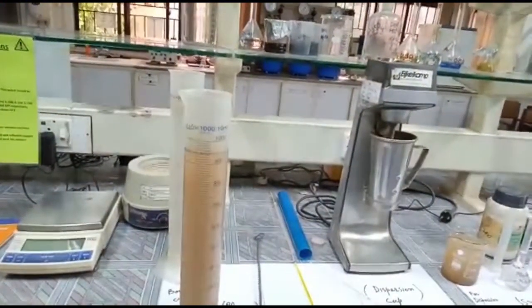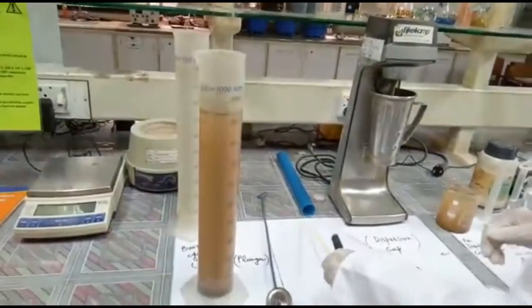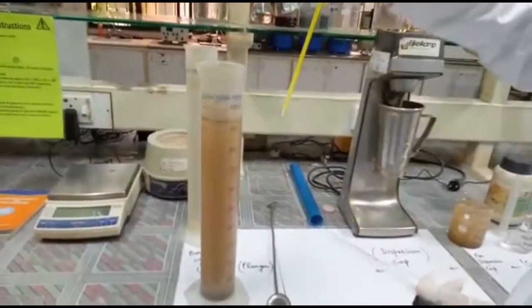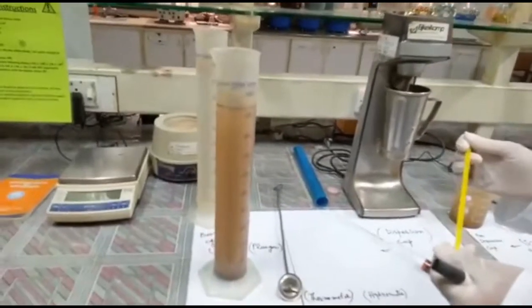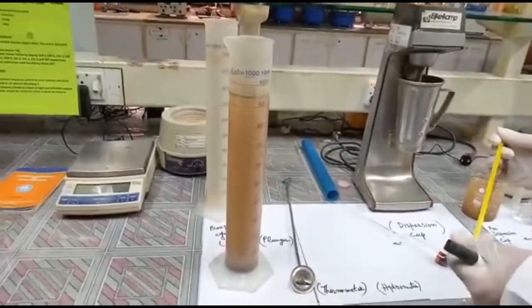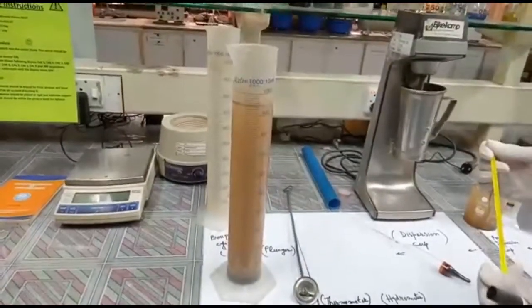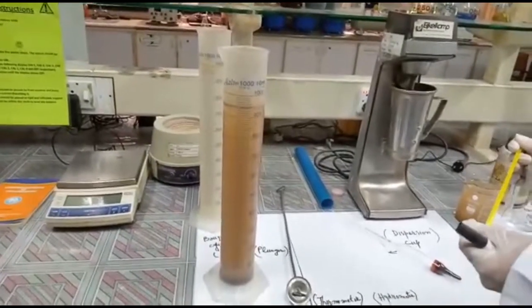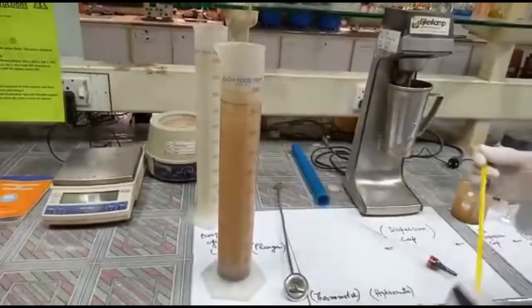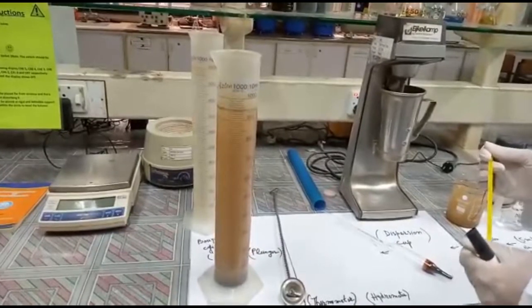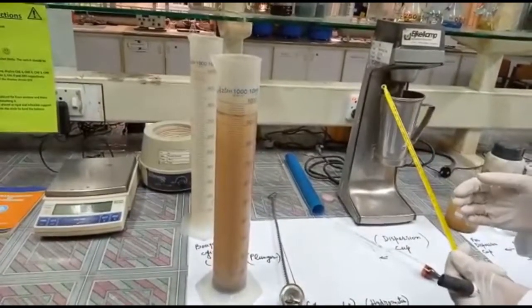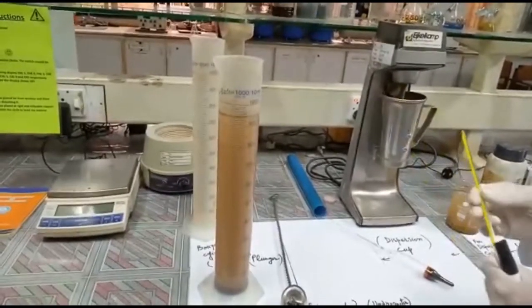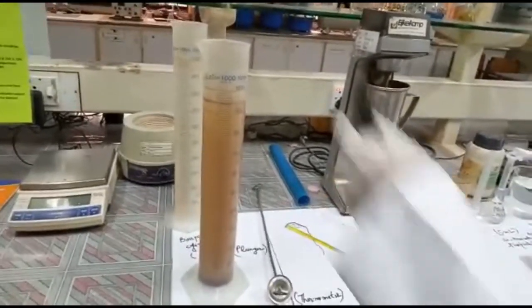Again, after this we use a thermometer to check the temperature of the suspension. Because every degree rise in the temperature from 20 degrees, we add 0.3 to the reading. And if the temperature is less than 20, every degree less than 20, we subtract 0.3 from the reading.